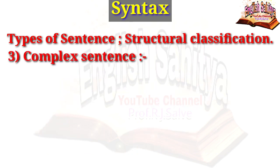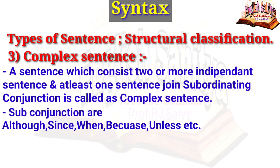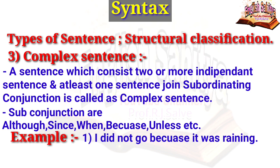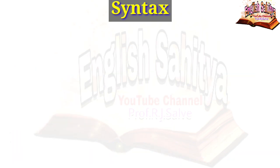A complex sentence consists of two or more clauses, at least one joined by a subordinating conjunction — such as although, since, when, because, unless, etc. For example, 'I did not go because it was raining' — 'because' is the subordinating conjunction. Another example: 'She has been learning dancing since her childhood' — 'since' is the subordinating conjunction.